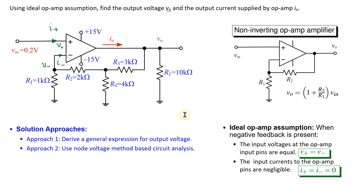Finally, let us compare the two solution approaches. Both rely on the ideal op-amp assumption and use the node voltage method. Approach 2 is a quick and efficient method to get a specific solution for a given circuit, especially when using a computer program. Approach 1 provides a general solution and more insight into the circuit, as it explicitly relates the input voltage to the output voltage and the resistor values.